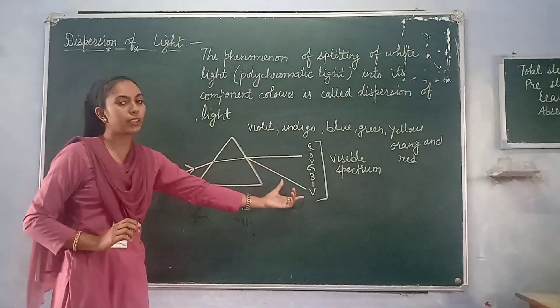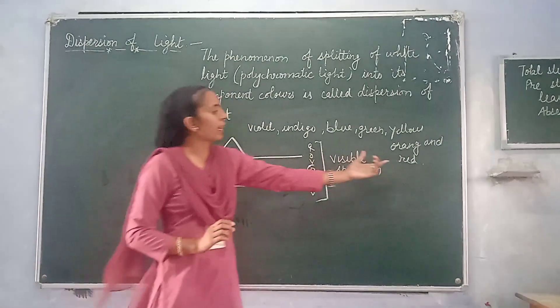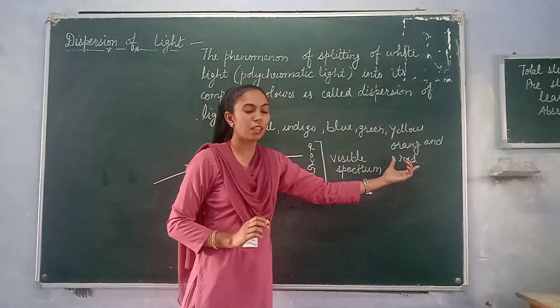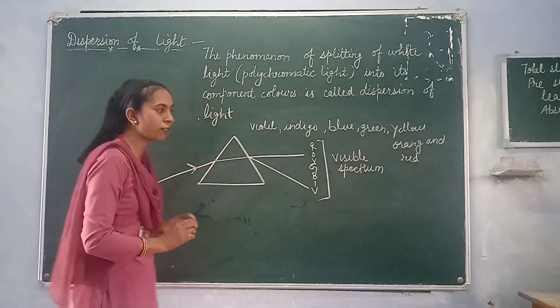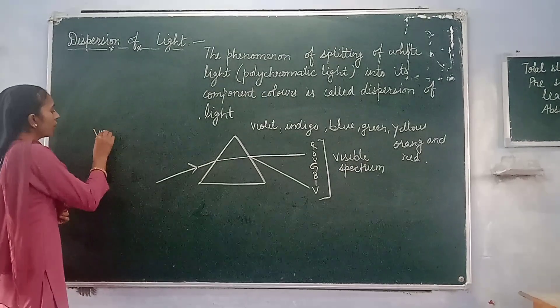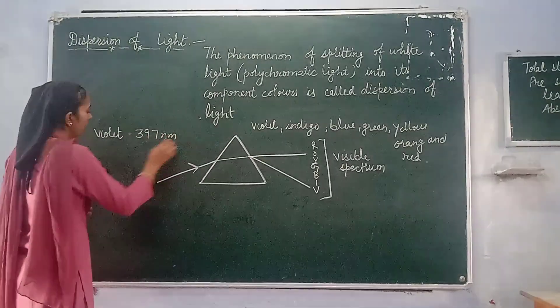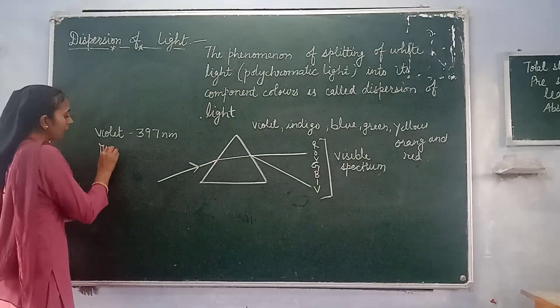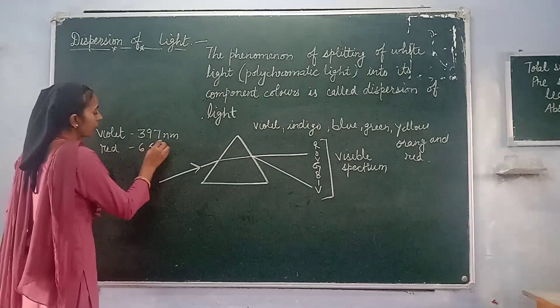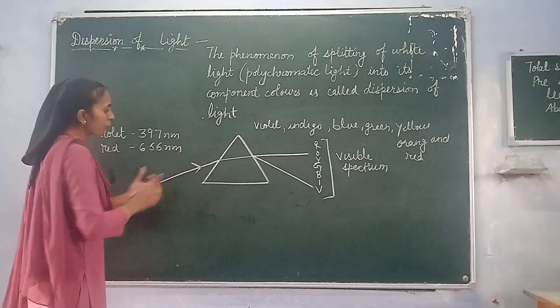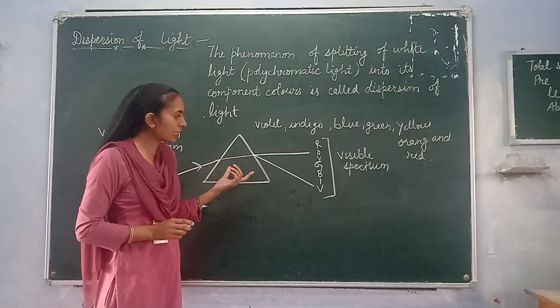Out of these seven colors, violet is the most diffracting color and red is the least diffracting color because of the difference in their wavelength. The wavelength of violet color is 397 nanometer and wavelength of red color is 656 nanometer.